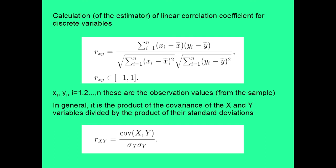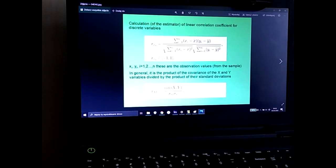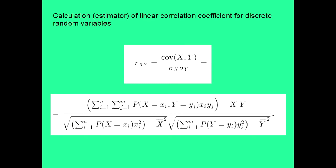And xi, yi are the observation values from the sample. In general, the correlation coefficient is the product of the covariance of the x and y variables divided by the product of the standard deviations.